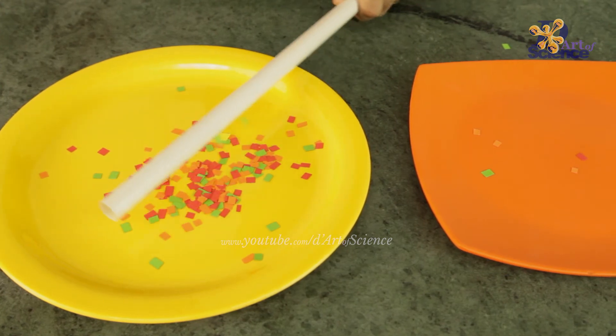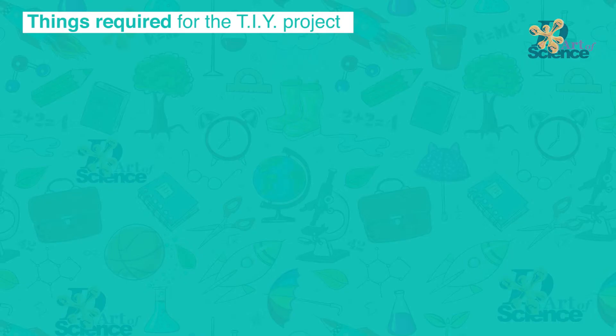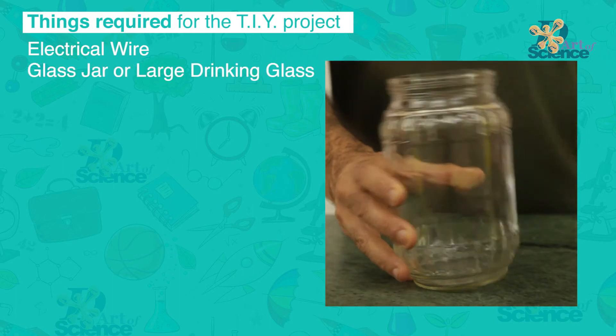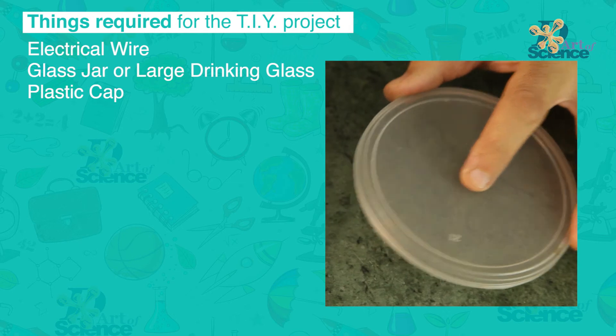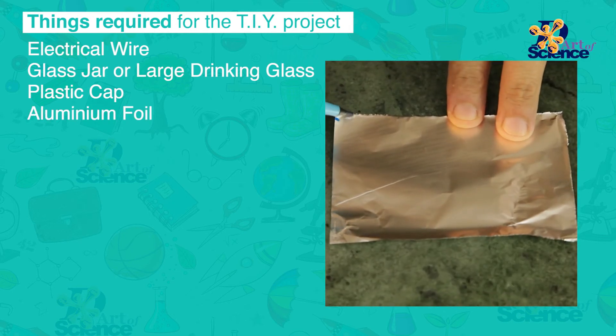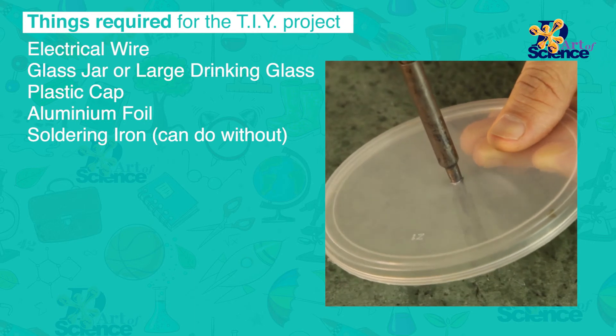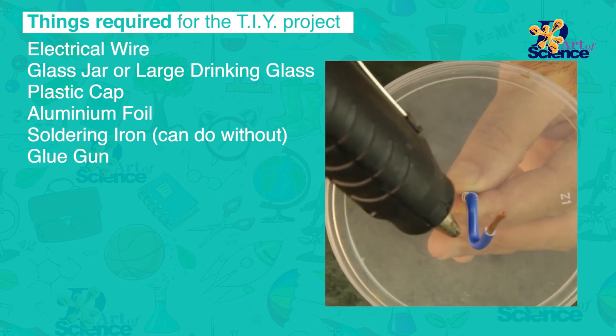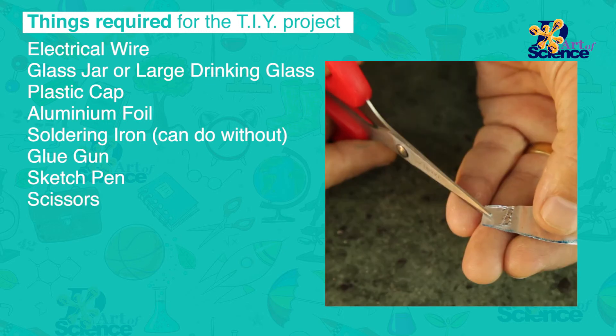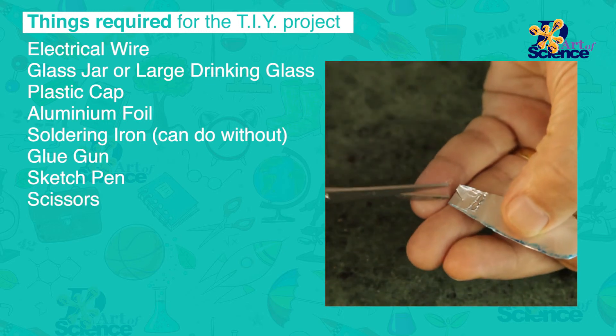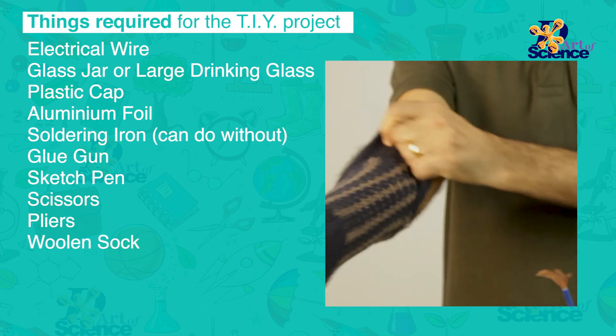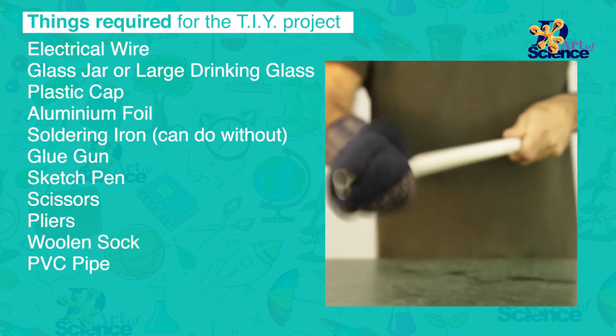Things required for the DIY project: electrical wire, glass jar or large drinking glass, plastic cap, aluminum foil, soldering iron, glue gun, sketch pen, scissors, pliers, woolen sock, PVC pipe.